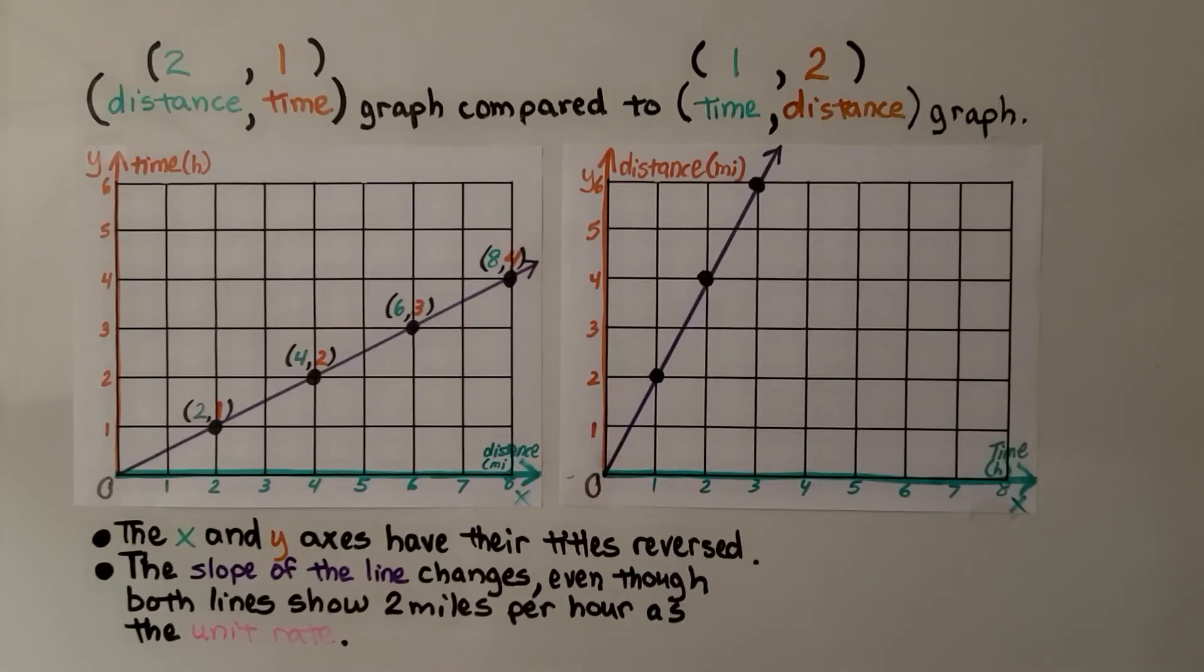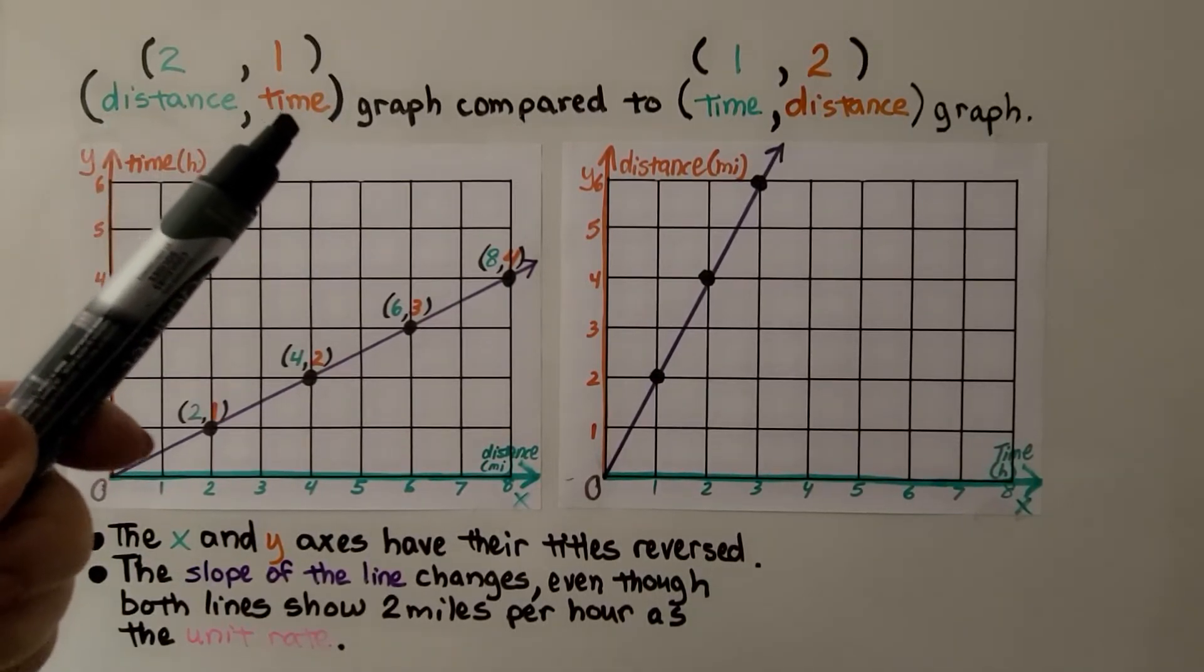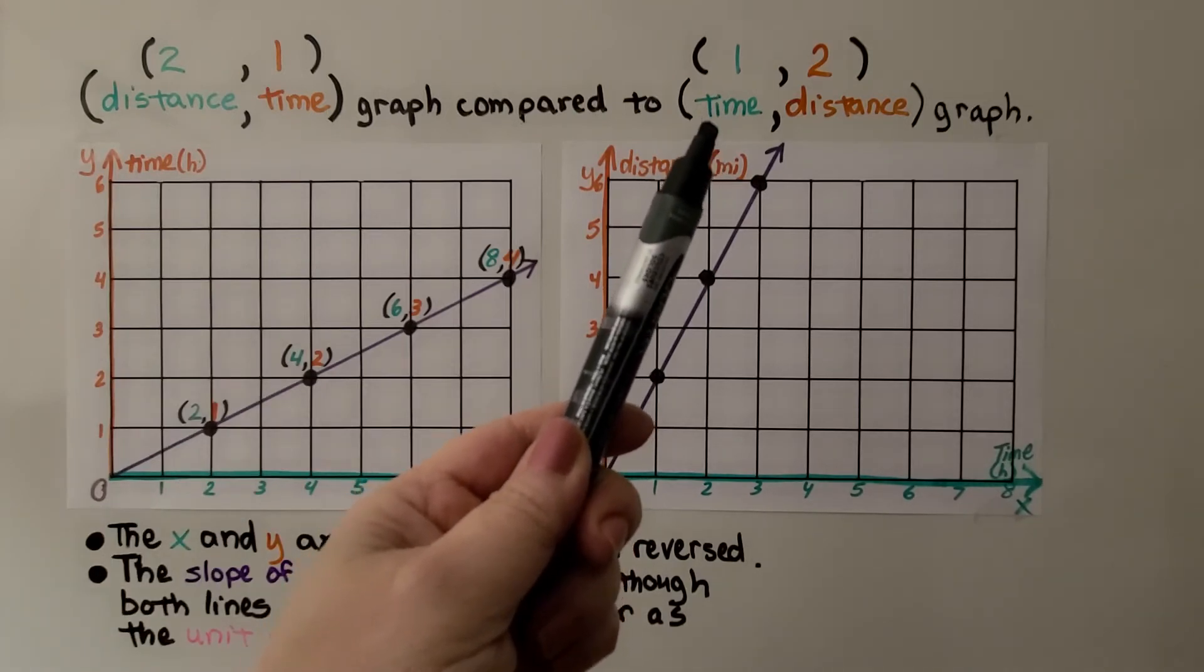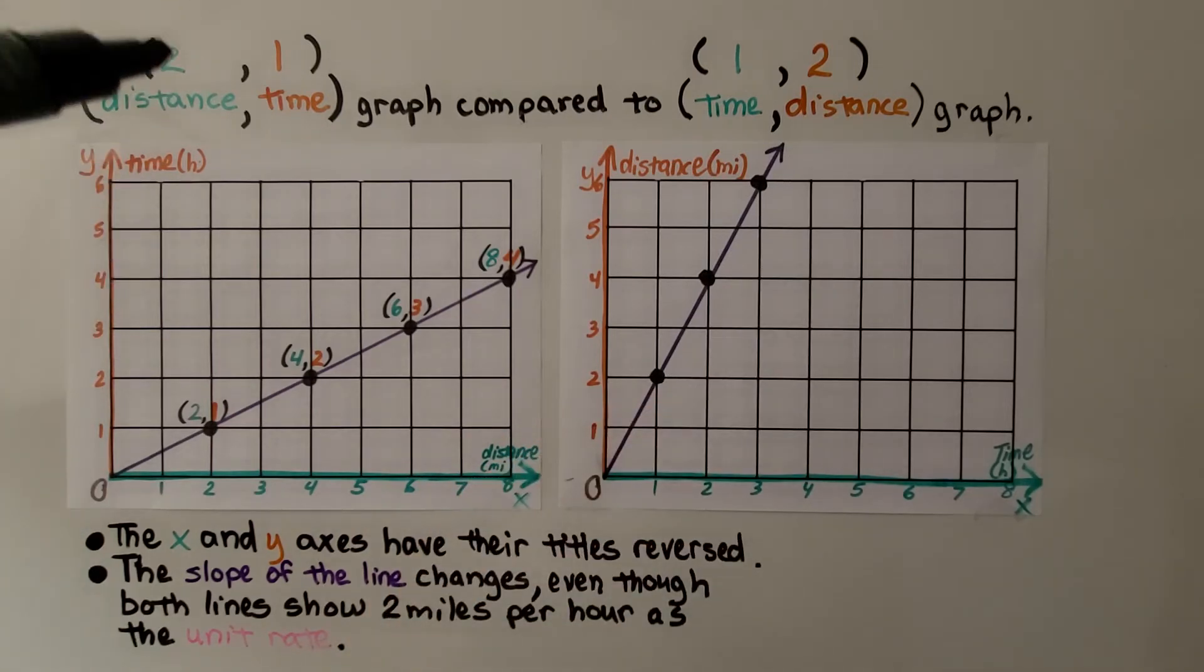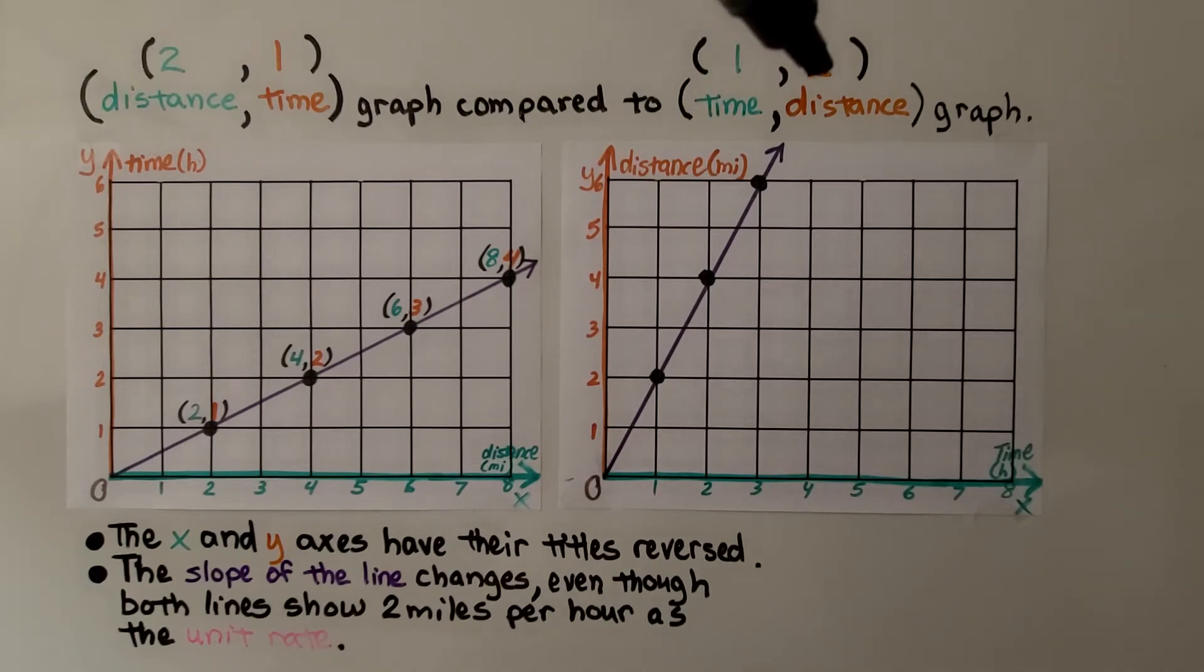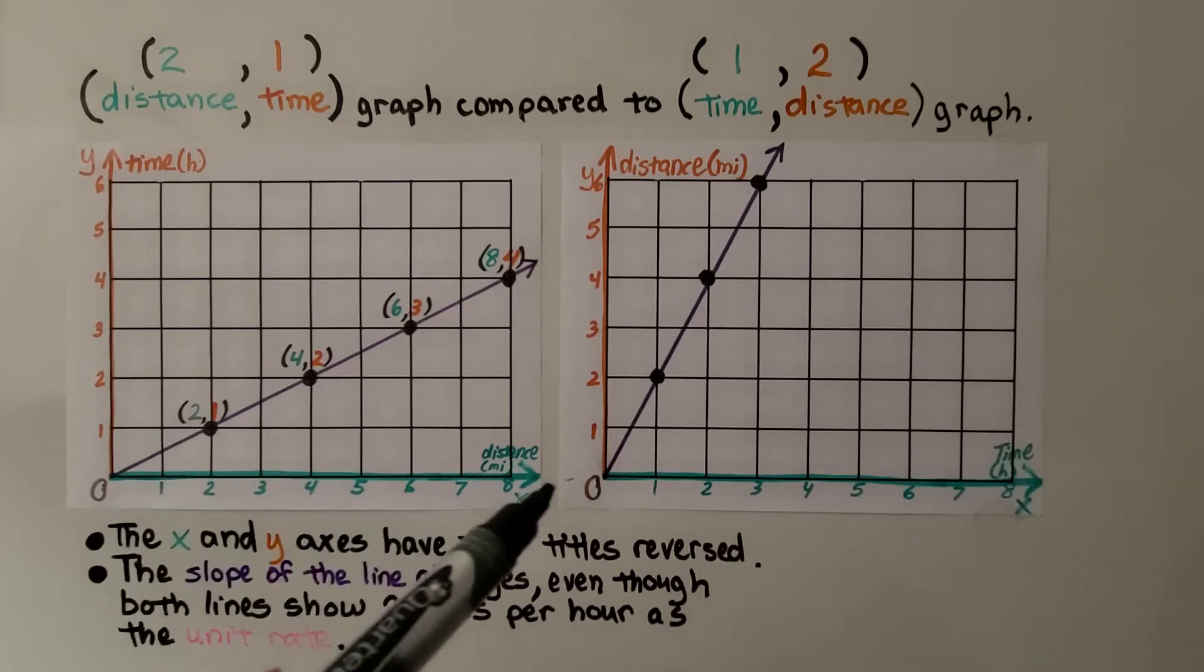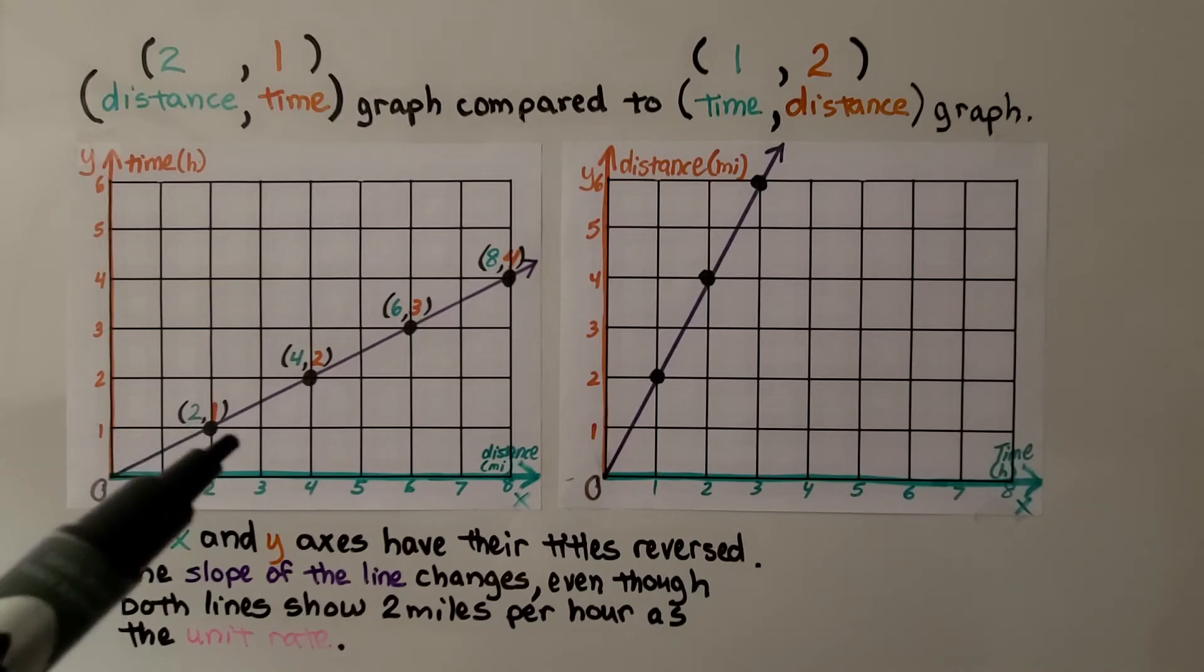Now, what would happen if our ordered pair had the x for distance and the y for time, and we compared it to an ordered pair that had time for x and distance for y? If our distance is 2 and our time is 1, then in this ordered pair, it would be time is 1, distance is 2. Here's our time for y. Here's our distance for x. If our distance is 2, right here, and our time is 1, we'd have a point right here.